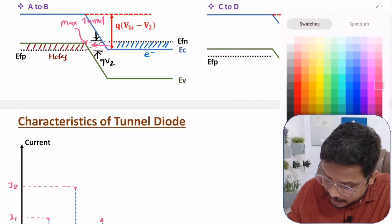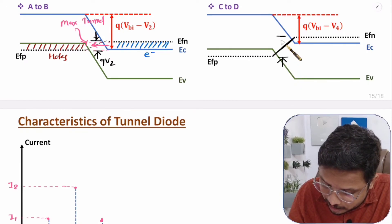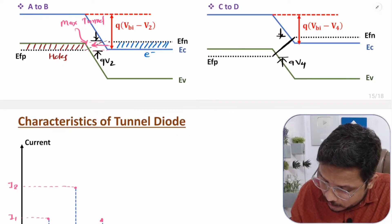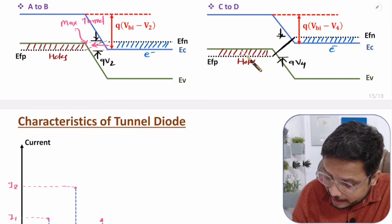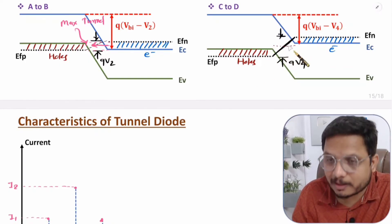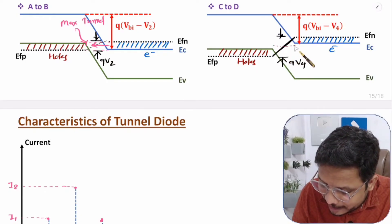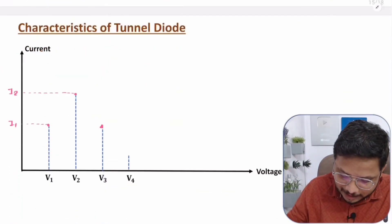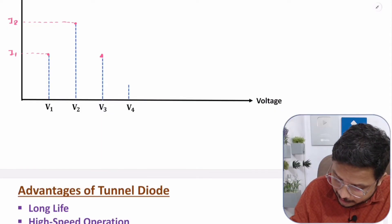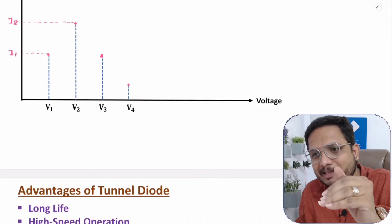Increasing voltage further to V4, the band bending is q×V4. Now the energy states of electrons and holes are significantly mismatched — the electrons' energy state no longer overlaps with the holes' energy state. As a result, tunneling current becomes almost zero at V4. After V4 there is no tunneling current.